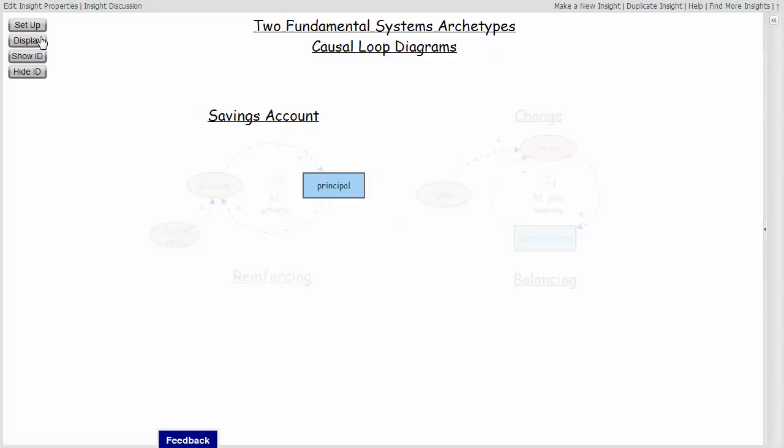If you think about a savings account, it has a principal amount that you put in. Periodically, that principal interacts with the interest rate to create interest. That interest is added back to the principal, and it creates a reinforcing or growth structure. It's what we call a reinforcing loop.